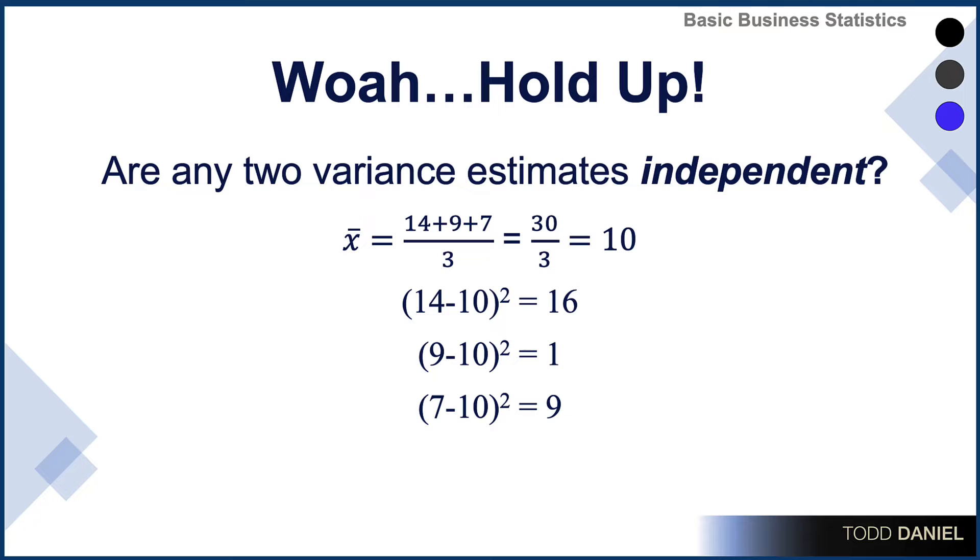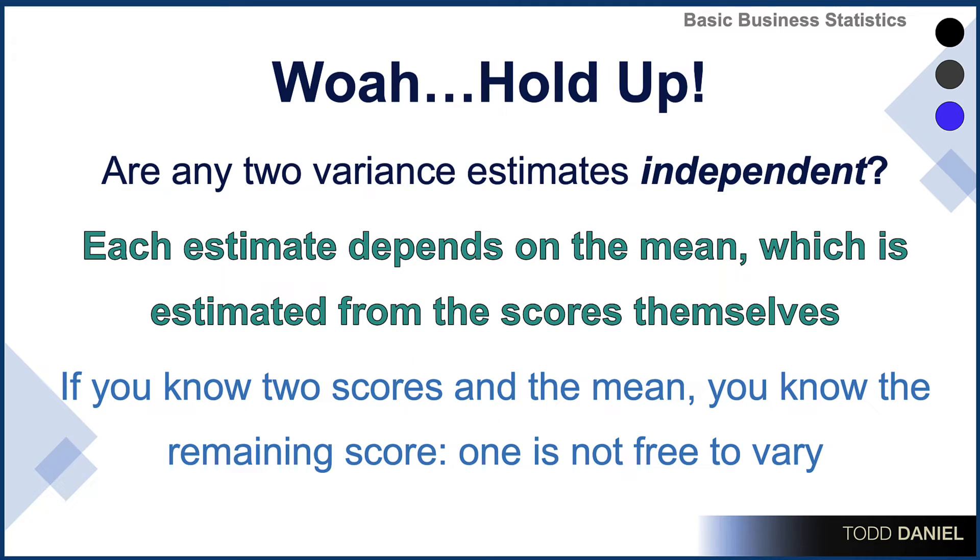Are these estimates independent of each other? Absolutely not. Each estimate depends on the mean, which has been estimated from the scores themselves. If you know two scores and the mean, you know the remaining score. One is not independent. One is not free to vary.